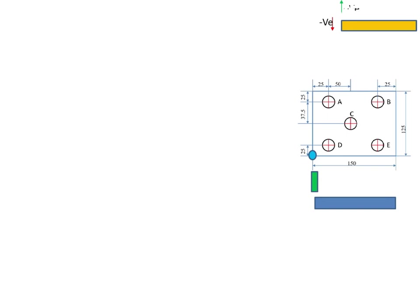Let's start the programming. The first step is to preset the tool with reference to the workpiece coordinate. Here X0, Y0, Z equal to 2 mm above the workpiece surface — these are my reference points at this position. So my first block is N001, G92, X0, Y0, Z2.0.